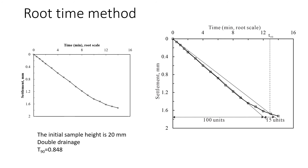Now let's look at the root time method. This is a different test with a different soil from the previous example. We plot results as square root of time in minutes, and settlement — the same vertical axis as the log time method.